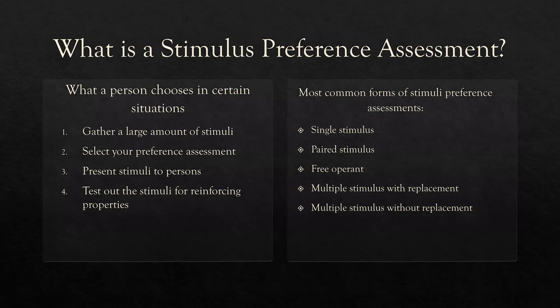So how do we do a preference assessment? It's about what a person chooses in certain situations. If you work with a client in different environments, their preferences might change depending on where and when services are being delivered. First, gather a large amount of stimuli — especially with some populations we work with, preferences can be very narrow, so you can never have enough potential preference stimuli. Select the assessment based on client need, present stimuli as outlined, then test items for reinforcing properties. Remember the rule: just because it's preferred doesn't mean it's reinforcing.